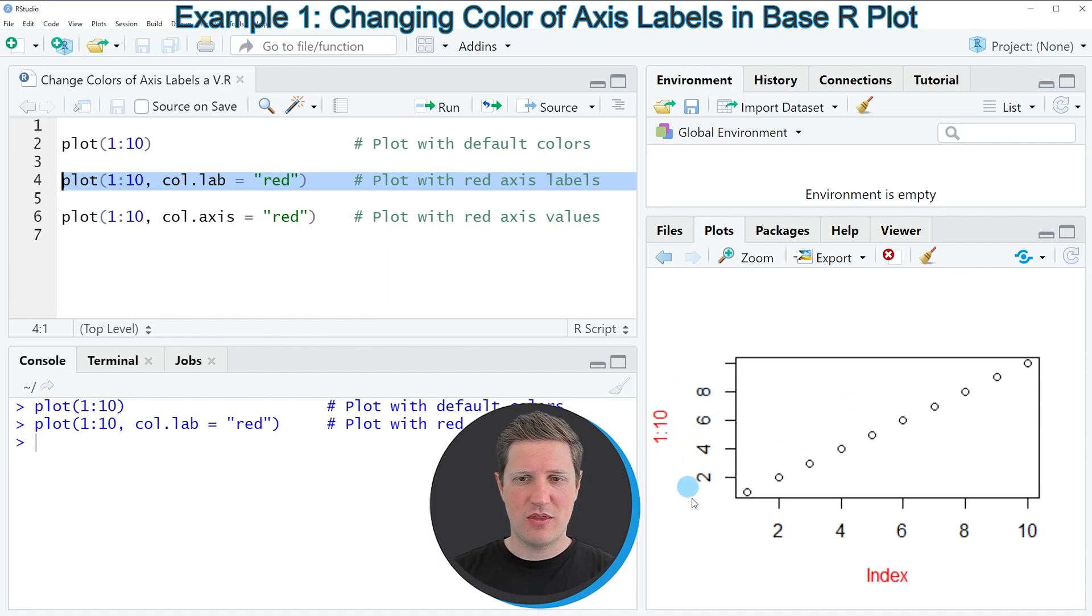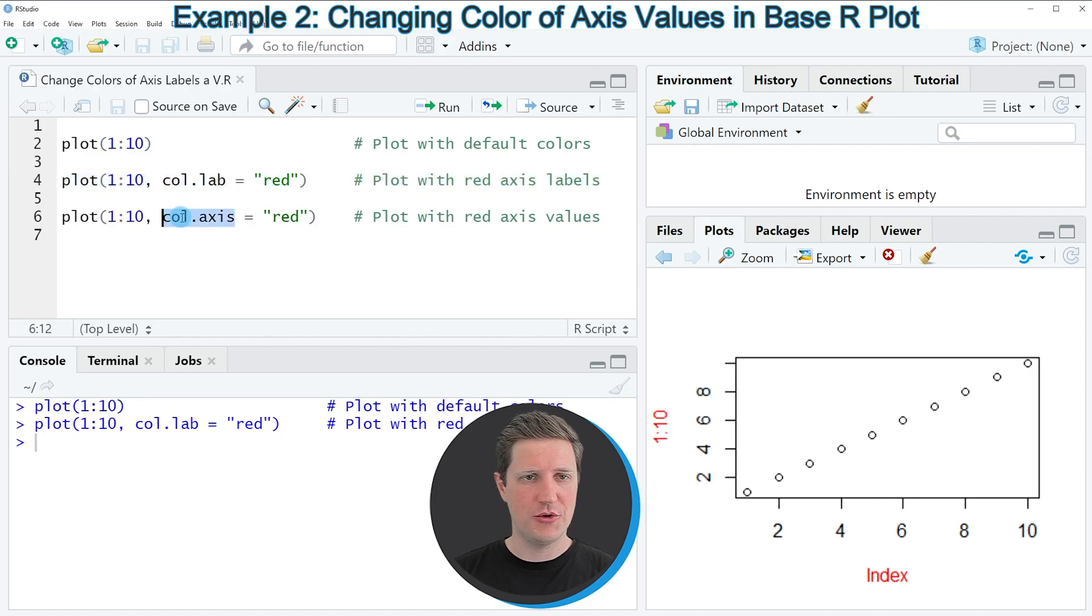However, you can also see that the values on our axis are still shown in black. If we want to change that, we need to specify the col.axis argument as you can see in line 6 of the code.